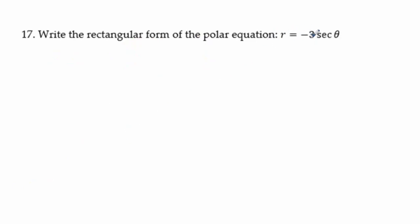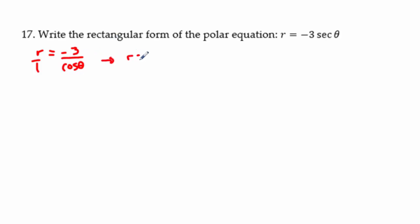Problem 17: r = −3 secθ. Change secθ to 1/cosθ, then multiply both sides by cosθ to get r cosθ = −3. Since r cosθ = x, the rectangular form is x = −3.